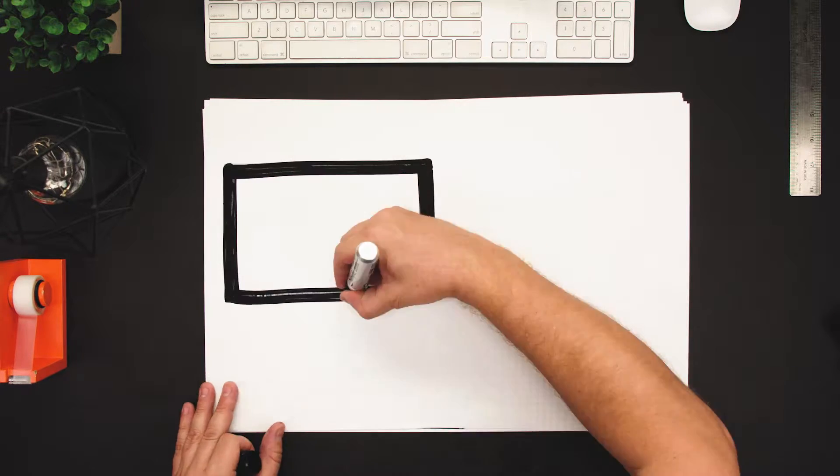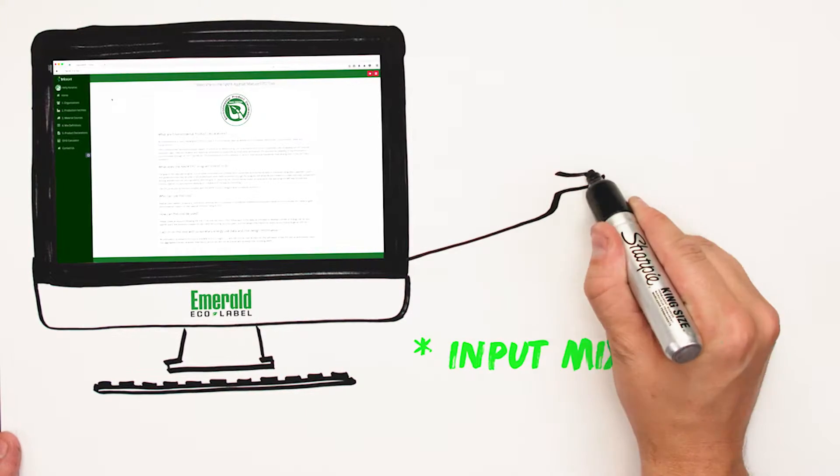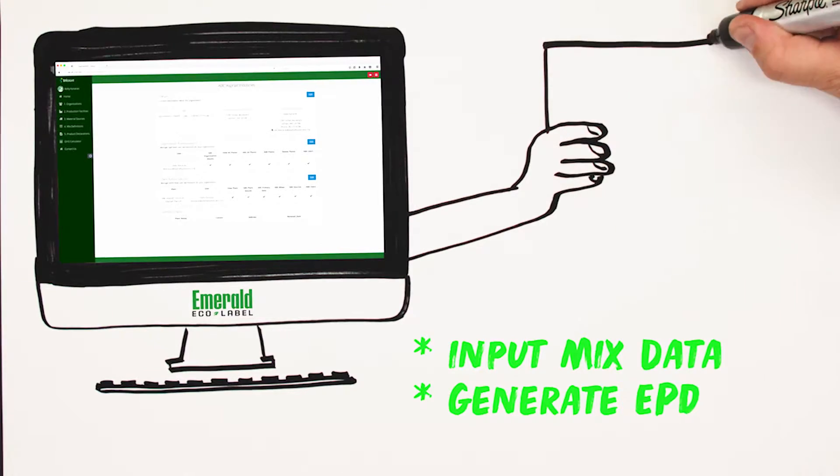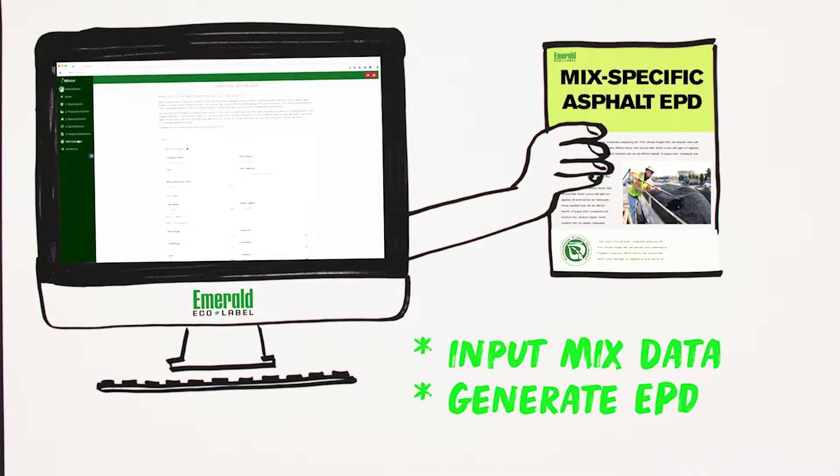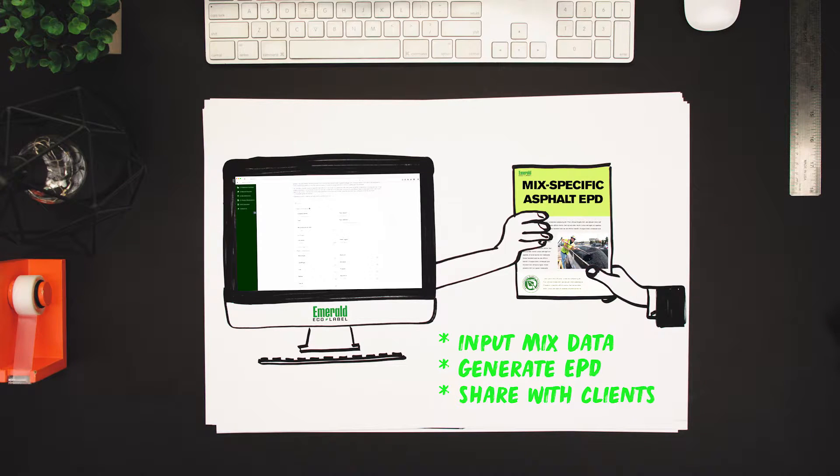The Emerald Eco Label tool makes it easy for a company to input data about what goes into an asphalt mixture, and then generate a credible, transparent EPD, which summarizes the environmental profile of an asphalt mixture, and is designed to be shared with customers so they can earn green rating systems credits, or otherwise use the information in pavement-type decisions.